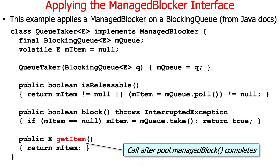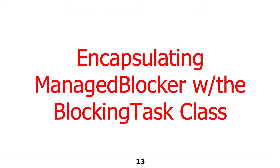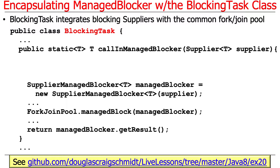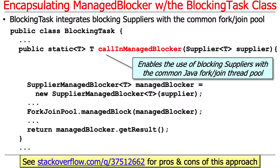When you call manageBlock you pass in this QueueTaker object, and when it returns you can get the result. Now let's talk about a convenience class that makes it even easier to use managed blocker. It's called BlockingTask, and it basically allows you to use a Java 8 supplier — a functional interface used to get a result. There's a method called callInManagedBlocker that enables the use of blocking suppliers in conjunction with the common Java fork join pool.